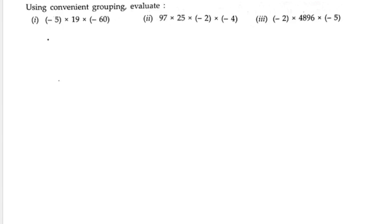Using convenient grouping, evaluate: first, (-5) × 19 × (-60). We can arrange them in any order and do the multiplication to get the final answer. So let us start the solution.